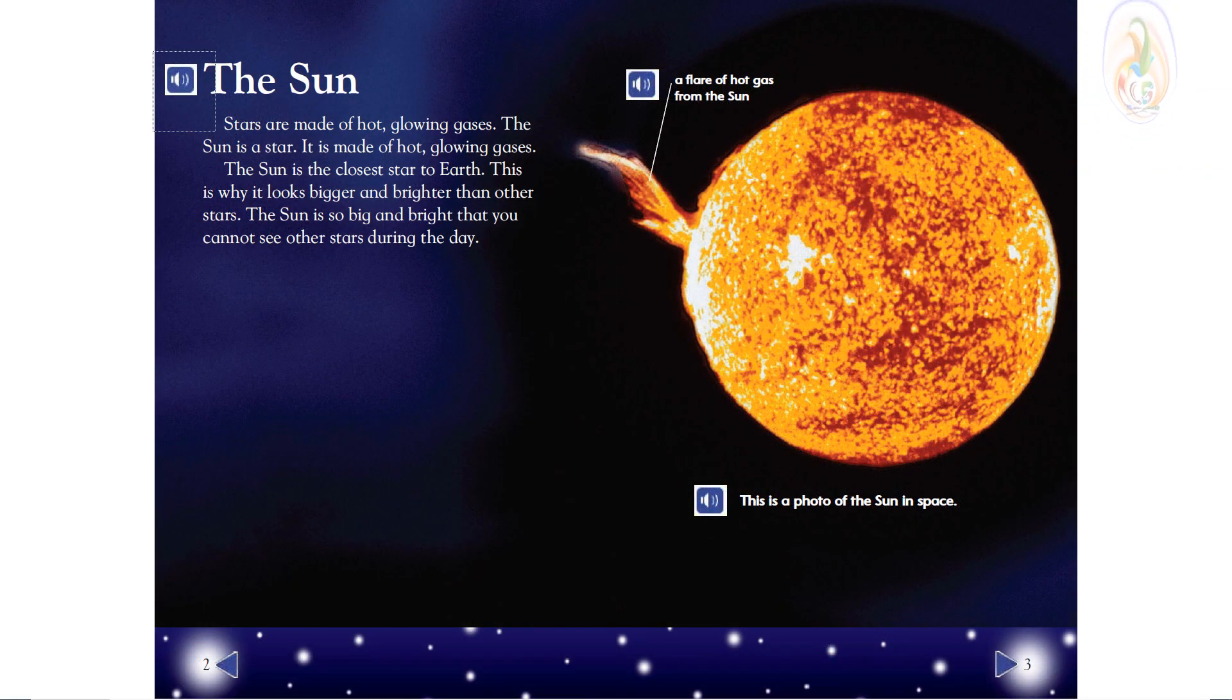The Sun. Stars are made of hot glowing gases. The Sun is a star. It is made of hot glowing gases. The Sun is the closest star to Earth. This is why it looks bigger and brighter than other stars. The Sun is so big and bright that you cannot see other stars during the day.